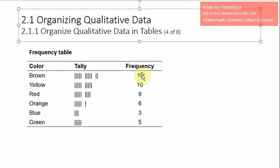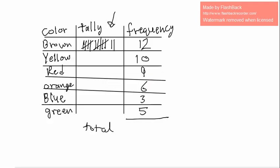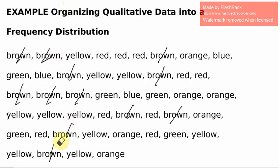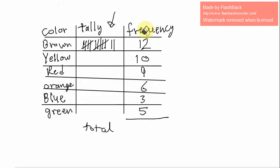The brown color appears 12 times, yellow 10 times, red 9 times, orange 6 times, blue 3 times, and green 5 times. Note it is not yet in descending order. In any frequency distribution, it is a good idea to add up the frequency column to make sure it equals the number of observations. In this example, we have 45 observations, and the frequencies add up to 45.